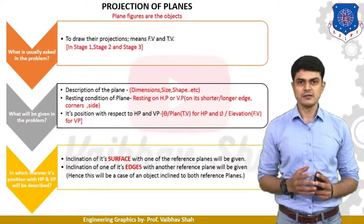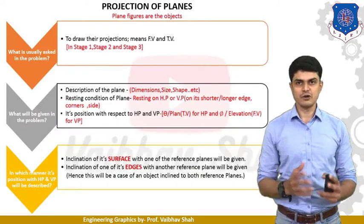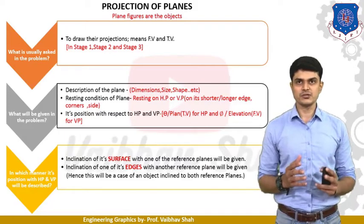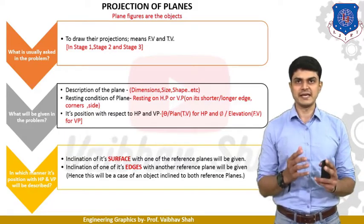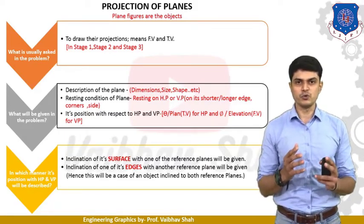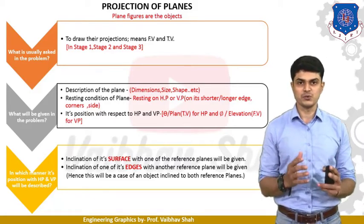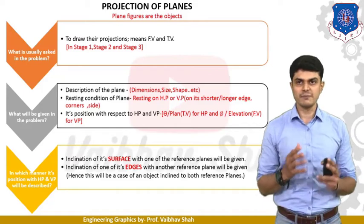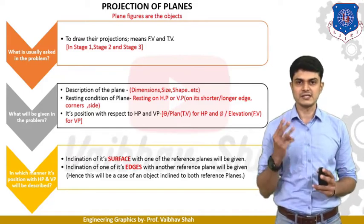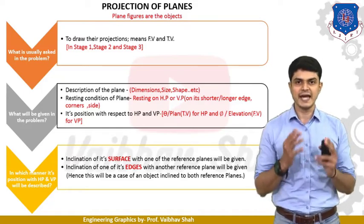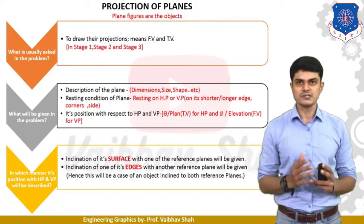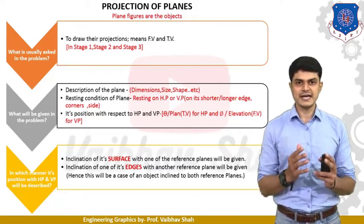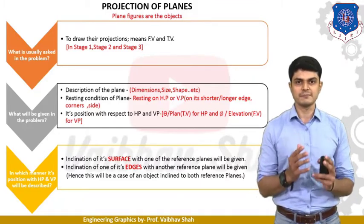In projection of planes, plane figures are our objects. What is usually asked in the problem? We need to draw the projection of these planes — their front view and top view — in stage 1, stage 2 and stage 3. There are three data which must be given: first, description of the plane like dimensions, size and shape of an object.